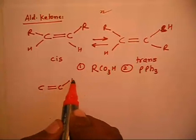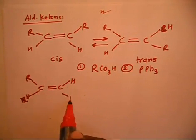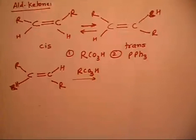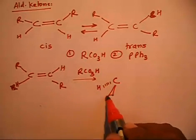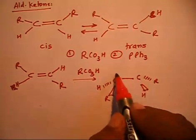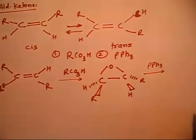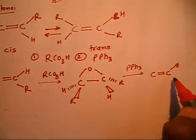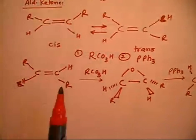The reaction sketch shows: starting with a cis-alkene where hydrogen and R groups are arranged on the same side. When treated with RCO3H, you get an epoxide where hydrogen goes down and R goes up on one carbon, with an oxygen bridge. When further treated with PPh3, you obtain a trans-alkene product.